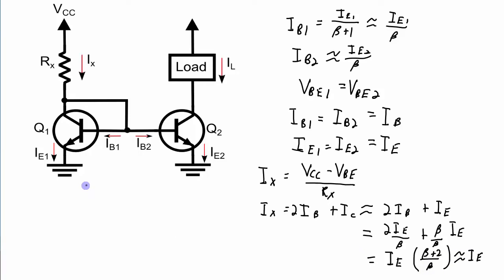Putting that all together, we see that IX is approximately equal to IE. IE1 and IE2 are equal to each other. I've designated them as IE, and that is approximately equal to IX. And since I can set the value of IX by setting the value of RX, I control IE, which means I'm going to control IL. So if I set the value of IX by setting the value of RX, then I will also be setting the value of the current through the load. So as that load changes, my current is not going to change by very much, as long as these transistors are kept in the active region.